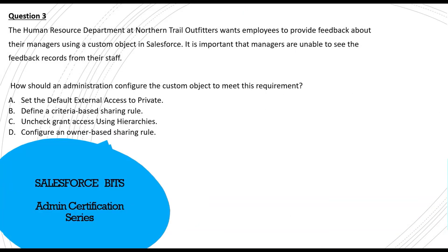The next question: the Human Resources department at Northern Trail Outfitters wants employees to provide feedback about their managers using a custom object in Salesforce. It's important that managers are unable to see the feedback records from their staff. Option A is to set the default external access to private. This means the org-wide default is private, so feedback records would be owned by staff — but external access is about external users, which may not be the most relevant option.